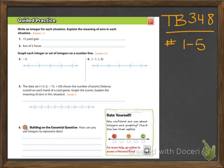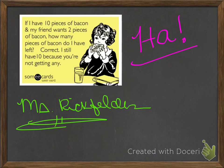Now on textbook page 348, numbers one through five, you want to work on your guided practice. This should take you no time at all. And here's a funny math meme: if I have 10 pieces of bacon and my friend wants two pieces of bacon, how many pieces of bacon do I have left? Correct — I still have 10 because you're not getting any. So that was just my little funny math meme at the end. Thank you.